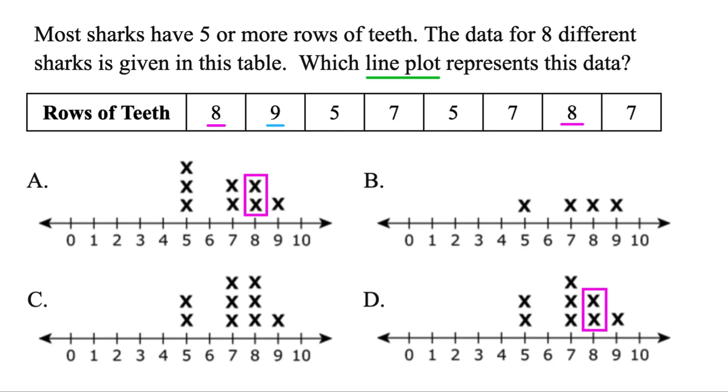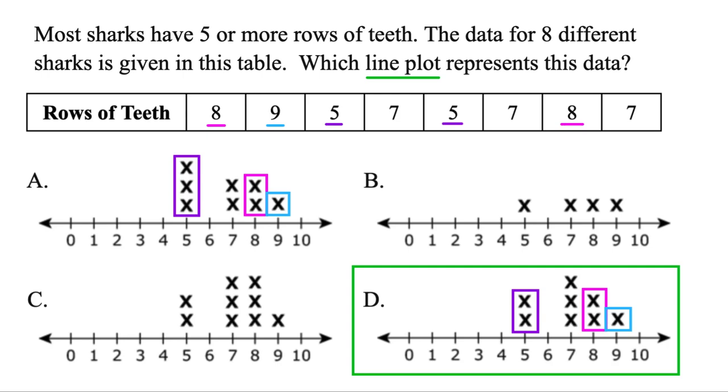Now one shark has nine rows of teeth. So we want one X above nine. Both of them have it. But then we only have two fives. But A, that actually has three X's there. D has two X's there. So D, that's definitely the correct answer.